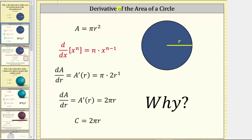Beginning with the area formula of a circle, let's determine dA/dr, or the derivative of A with respect to r, which we can also denote A prime of r. To find the derivative, we apply the power rule of differentiation, and therefore the derivative equals pi times the derivative of r squared with respect to r, giving us pi times two r raised to the power of one. Simplifying, we have dA/dr, or A prime of r, equals two pi r, which is the circumference of a circle.